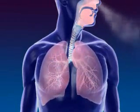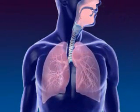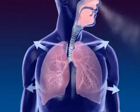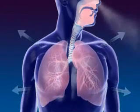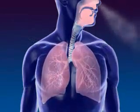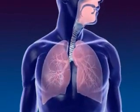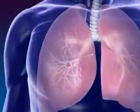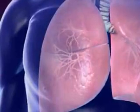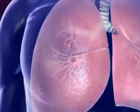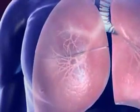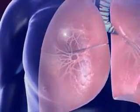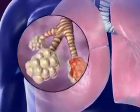Lungs are spongy tissue with alveoli and blood capillaries. Breathing occurs because of the expansion and contraction of the lungs. The bronchi carrying the air subdivide into smaller branches called bronchioles.